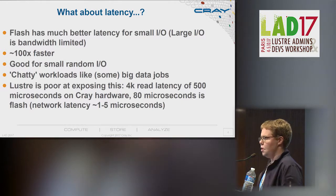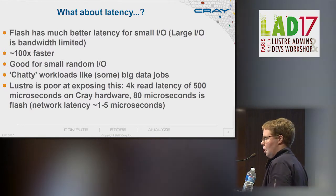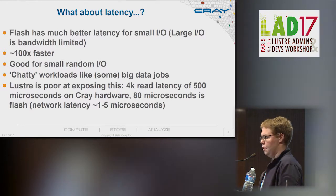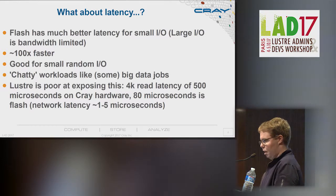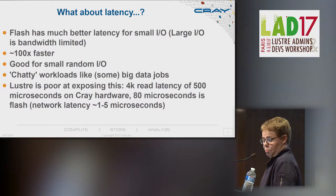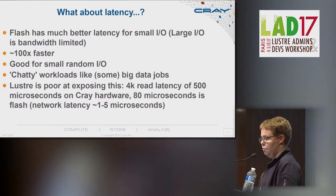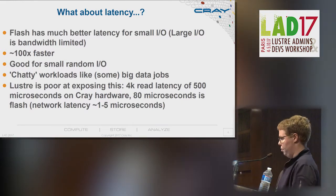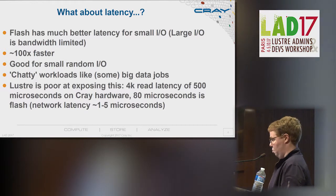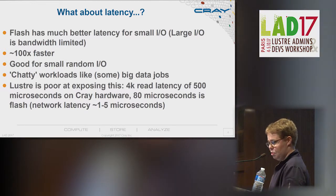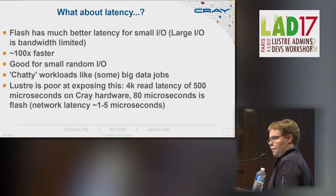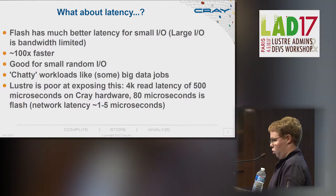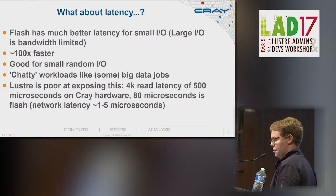Flash has much better latency for small IO than spinning disks do. Of course, when we get into the realm of large IO, we don't talk about latency — we worry about bandwidth instead. The latency is about a hundred times better than for spinning disk. This is really good for small random IO and for chatty workloads, which is to say workloads that maybe write and read the same data repeatedly from different places. Big data jobs are the example everyone keeps citing.